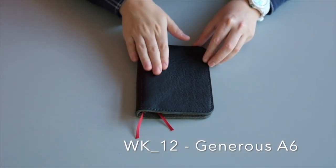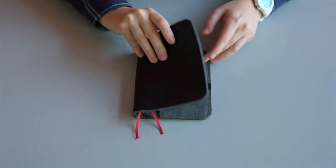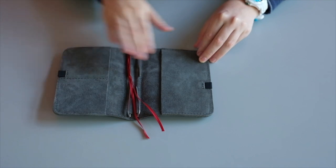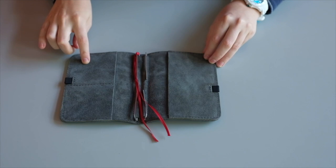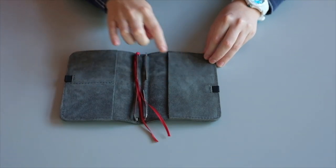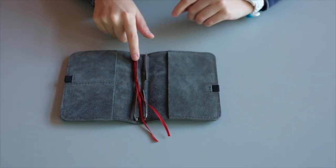This one is a WK-12, available in two sizes. It comes in very nice, high quality, supple leather. The inside is suede. Two card pockets on the left hand side, a larger pocket on the right hand side. Only two sets of clips.